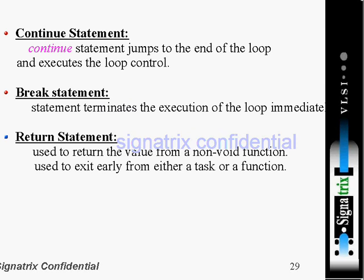Now let's look at them one by one. The 'continue' statement jumps to the end of the loop and executes the loop control again. For example, in a for loop running 10 times with statements 1, 2, 3, 4 — if 'continue' is placed between statement 1 and statement 2, it will exit the current iteration and start the next iteration.